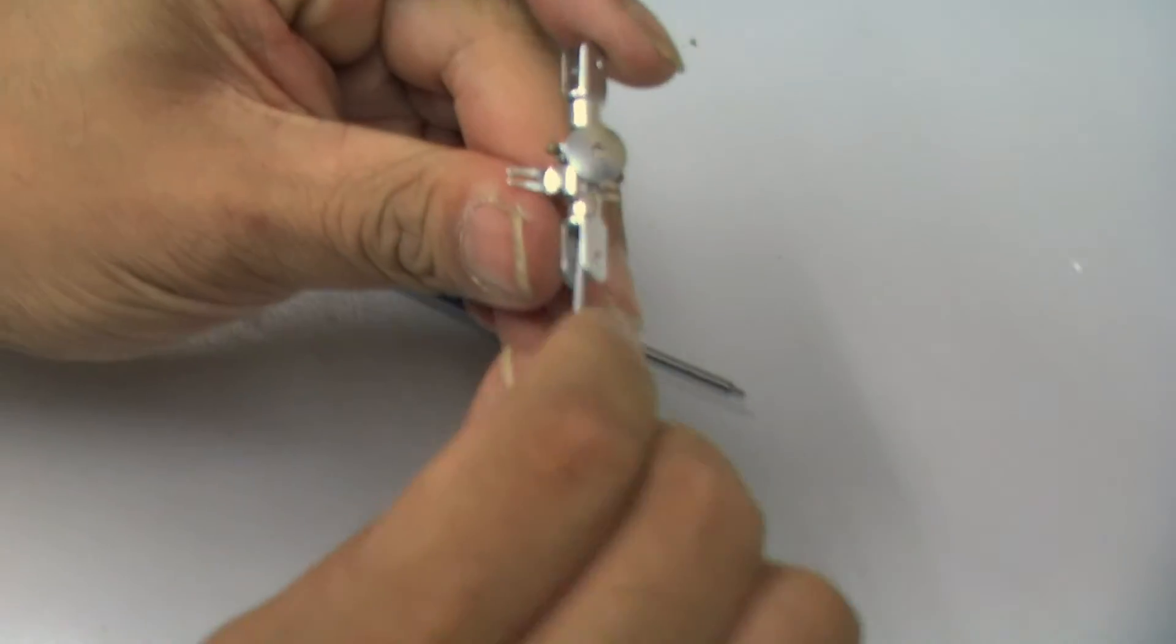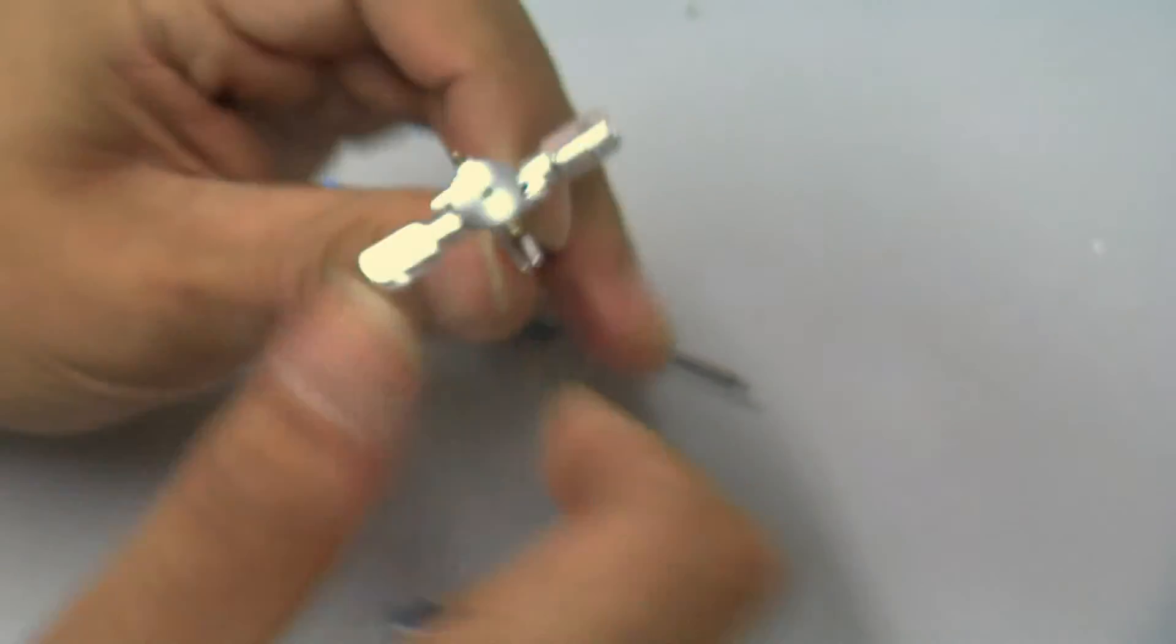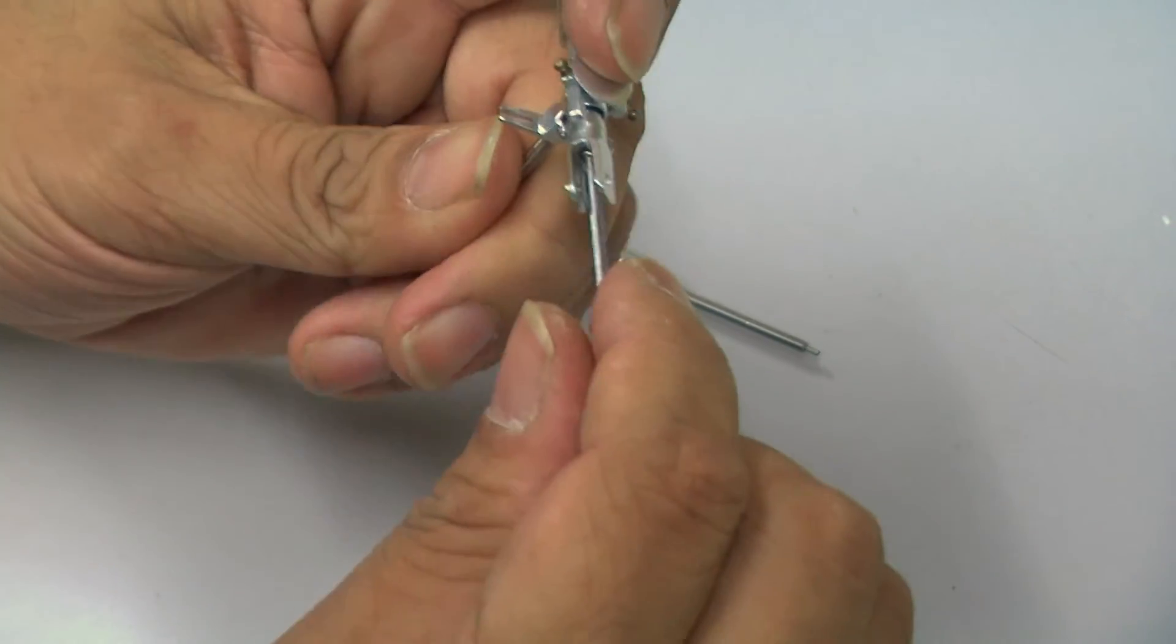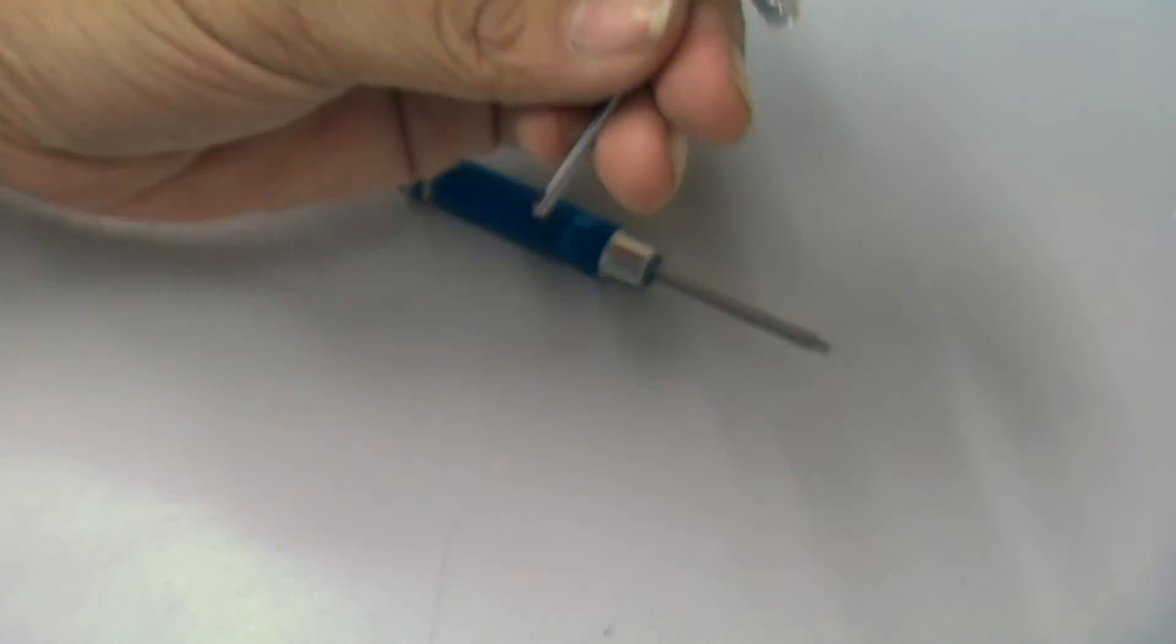Make sure you turn the feathering shaft a bit to make sure both sides are nice and smooth. Now everything is nice and smooth.